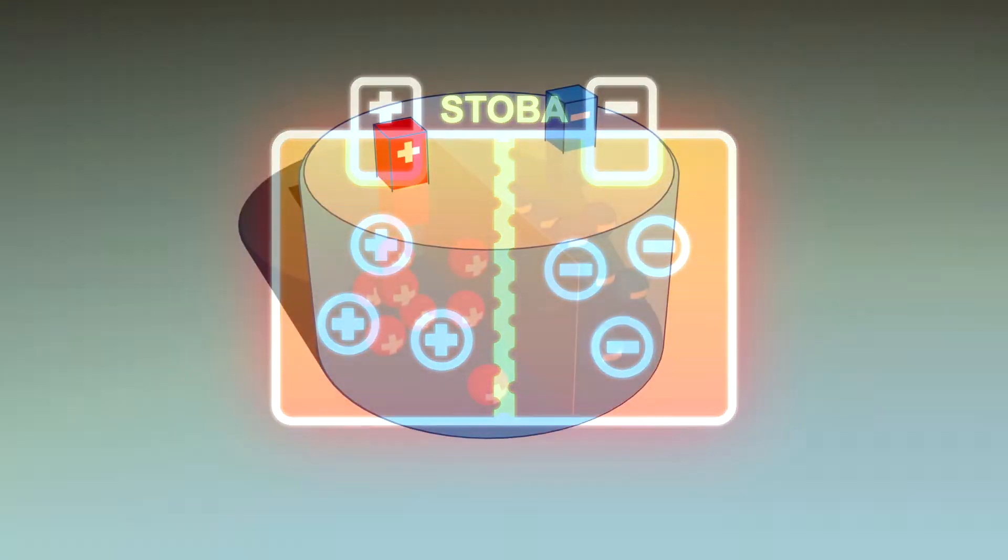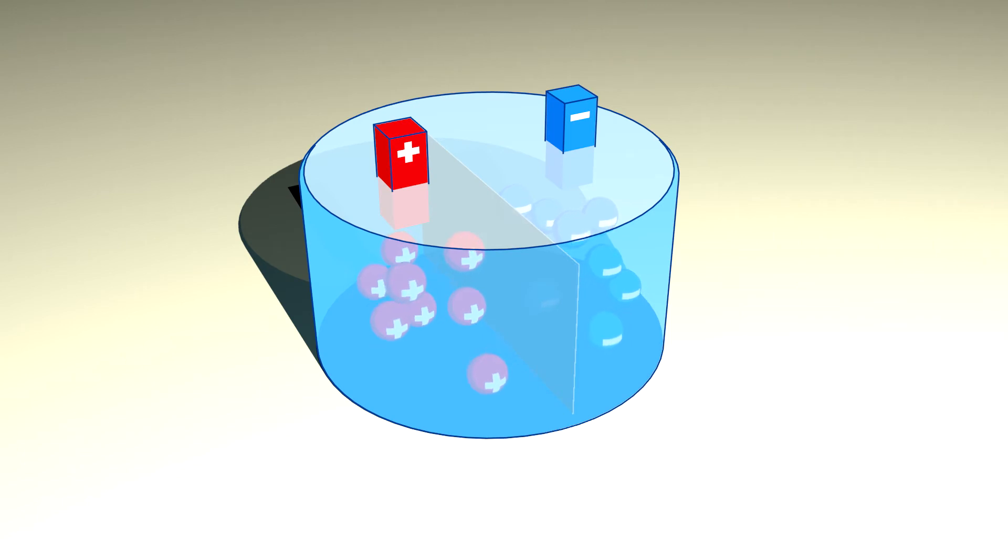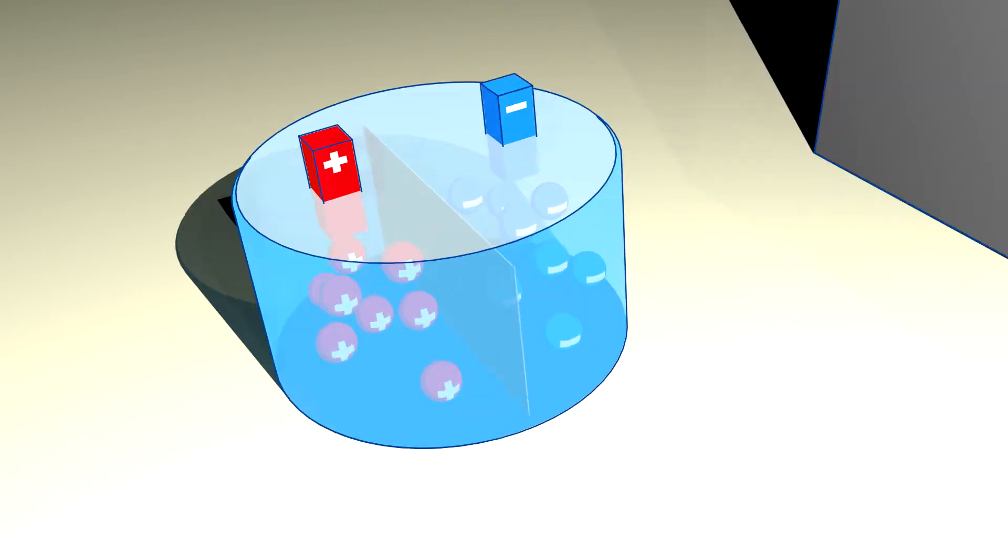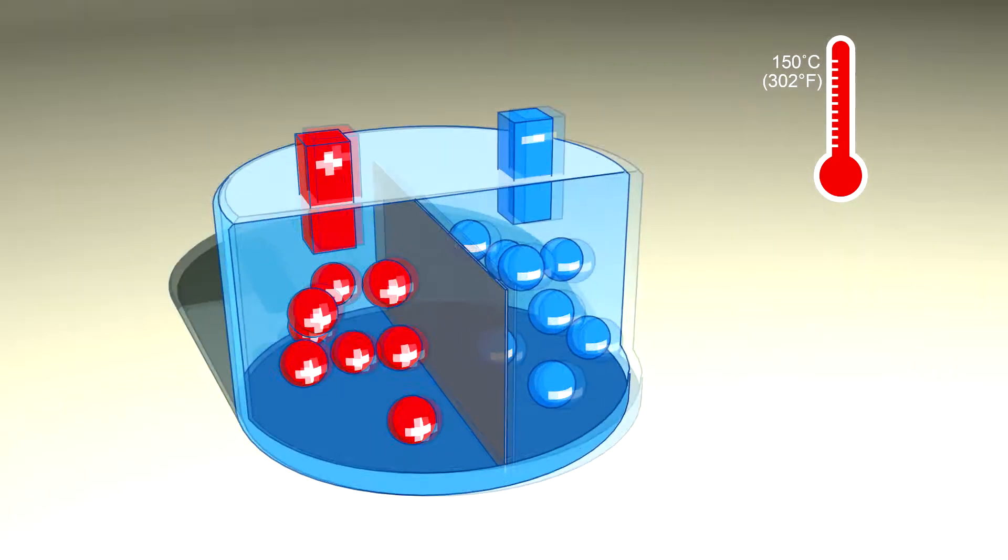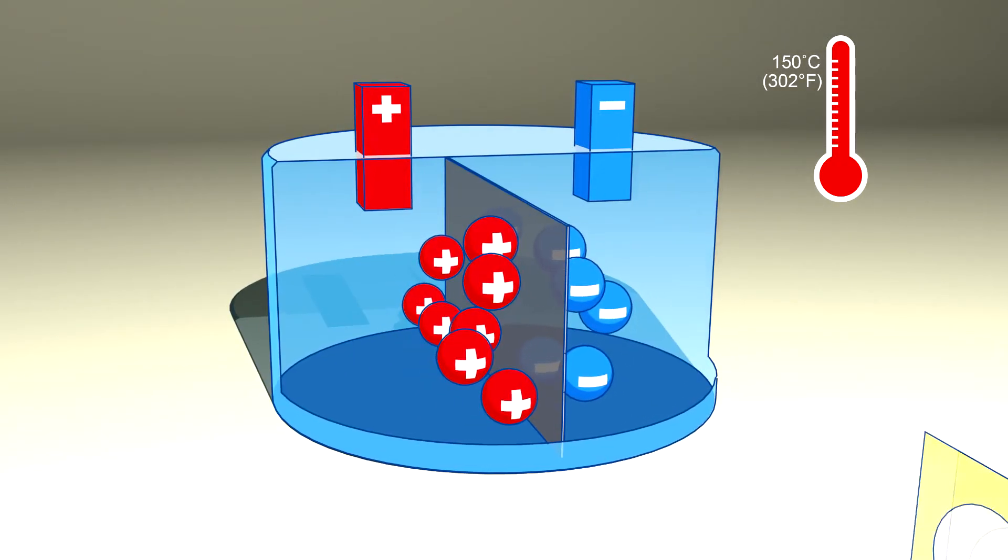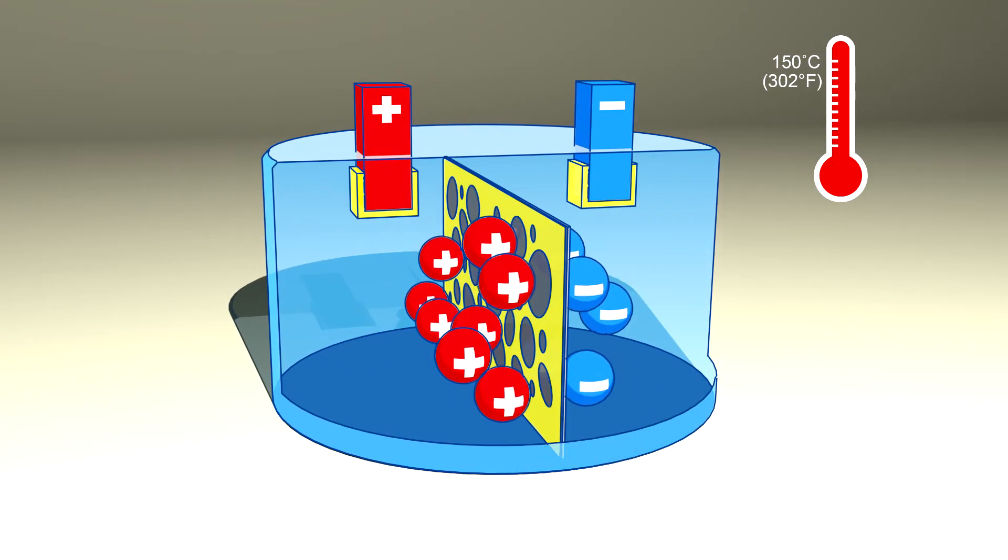When the battery heats over 150 degrees Celsius due to external impact or piercing, the endpoints of the STOBA polymer's branched structure react together to form a cross-linking three-dimensional network.